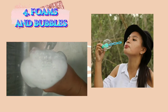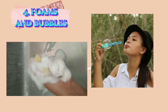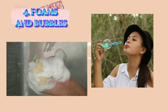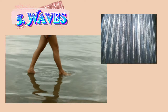Fourth one is foams and bubbles. These are patterns in nature that are formed from repeating spheres. Foams are volumes of bubbles of many sizes, where the spaces between each larger bubble contain smaller bubbles. In some ways, foams can be fractal.